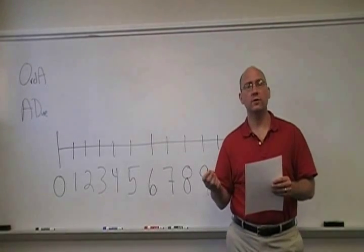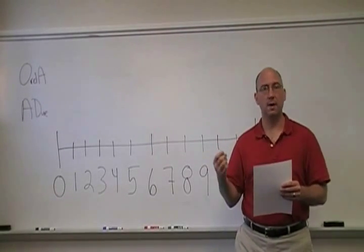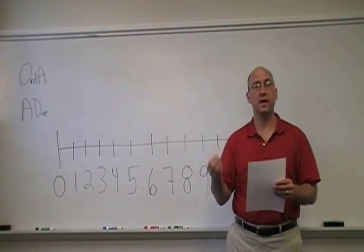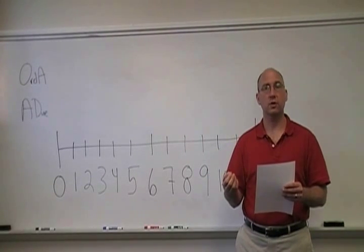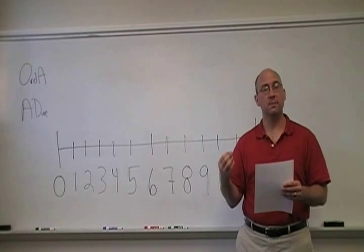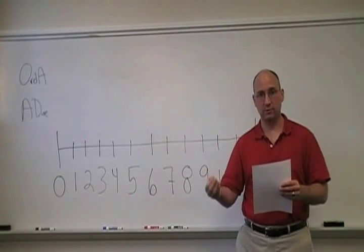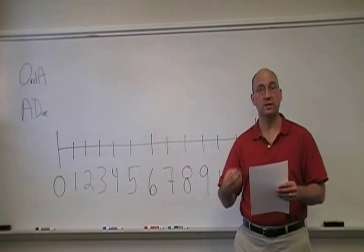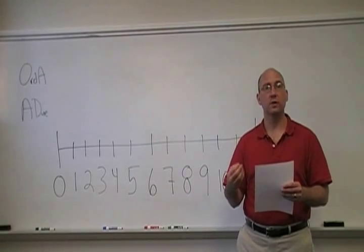In this problem, we need to recommend to Apollo, or at least indicate what Apollo should choose. Apollo just received word that he'll be getting a bonus, and is it better for him to take it as an ordinary annuity — which sometimes will be referred to just as an annuity — or as an annuity due.